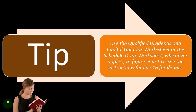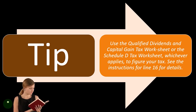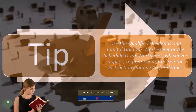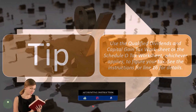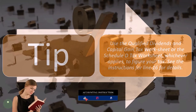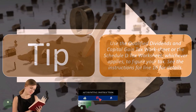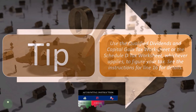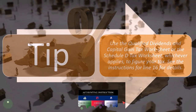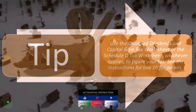Tip: use the Qualified Dividends and Capital Gain Tax Worksheet or the Schedule D Tax Worksheet, whichever applies, to figure your tax. See the instructions for line 16 for details.